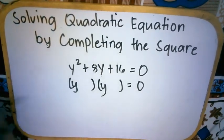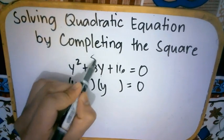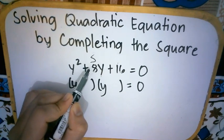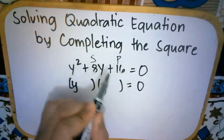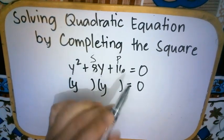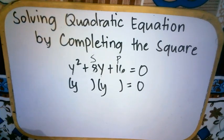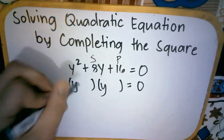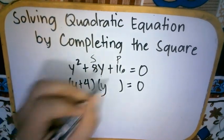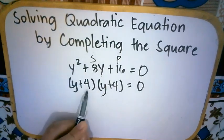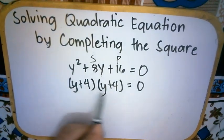We have y here and then y. Then, ito yung sum, pag pinag-add mo ay 8. And then, ito yung product, pag pinag-multiply mo dapat 16. Think of 2 numbers na kapag pinag-add mo ay 8 and kapag pinag-multiply mo ay 16. Yes, we have 4 and 4. 4 plus 4 is 8. 4 times 4 is 16.